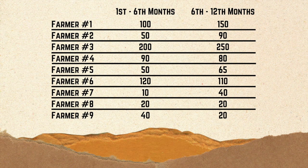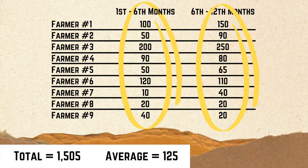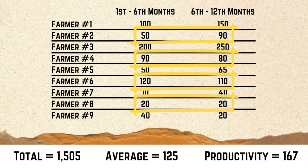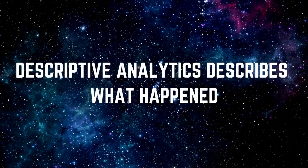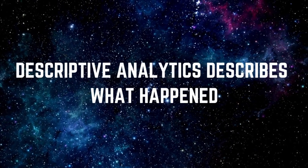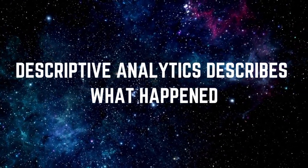Intuitively, the tax collector would calculate the total number of bushels produced for that year, maybe the average number of bushels produced per month, and the average number of bushels produced in a year per farmer. That tax collector would have just conducted descriptive analytics, which uses the techniques of aggregation to quantify what has happened.